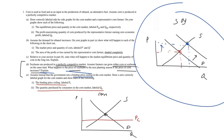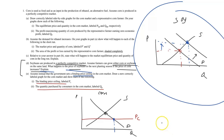To find the quantity purchased by consumers — QP — your first instinct might be to look at the demand curve, but that's incorrect. Because the price is lower, suppliers won't produce as much. So the quantity available is determined by the supply curve at the price ceiling level. That's the amount consumers can actually buy, and we label it QP.